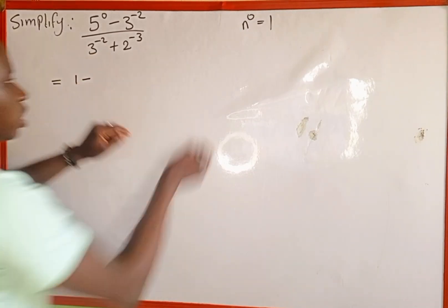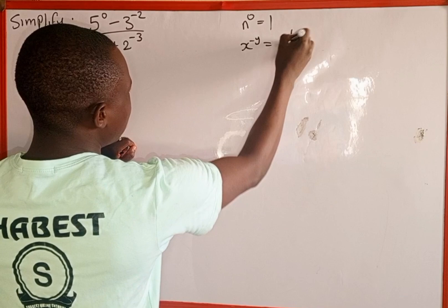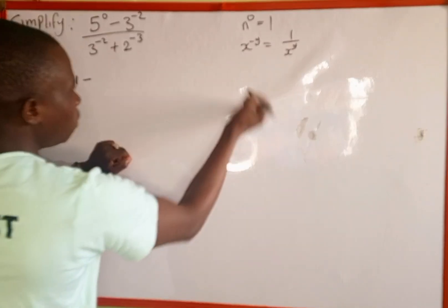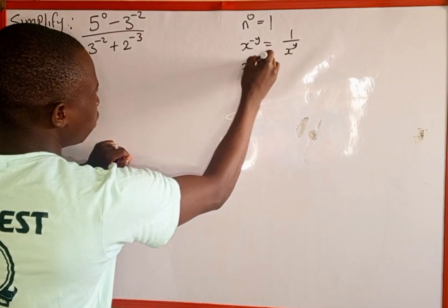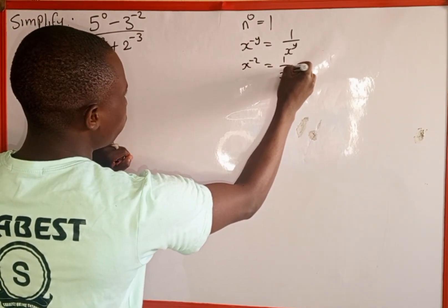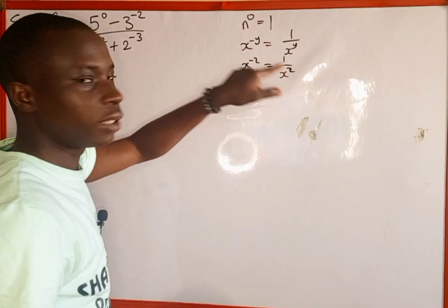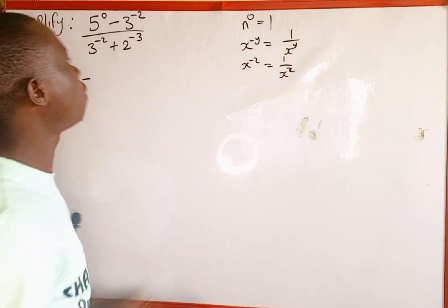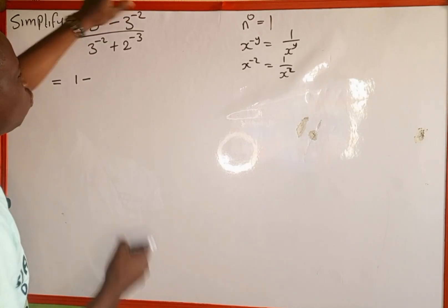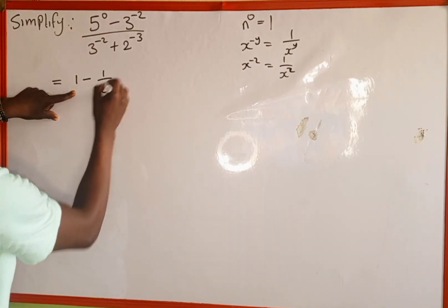We recall that when we have x raised to the power of negative y, this is the same as 1 all over x to power y. Similarly, when we have x raised to the power of negative 2, it's the same as 1 all over x to power 2. When it comes down, the negative returns to positive.